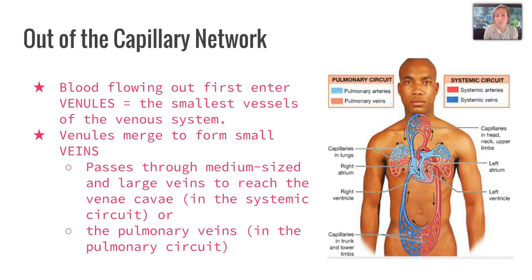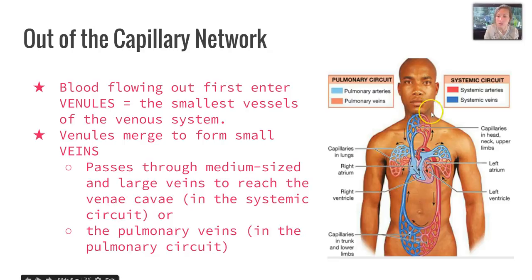Out of the capillary network, blood is going to flow first to the venules, the smallest vessels of the venous system. Venules merge to form smaller veins, and those pass through medium-sized and large veins to reach the systemic system, where your vena cava — which is this system here, we've seen this picture before — or they could reach the pulmonary veins in the pulmonary circuit, which is this circuit here that obviously reaches the lungs.